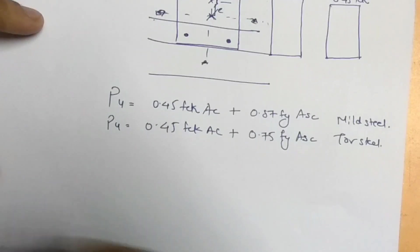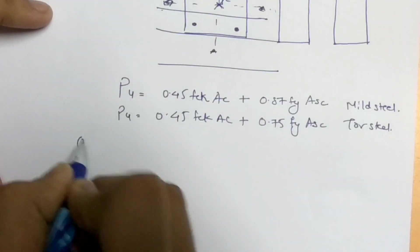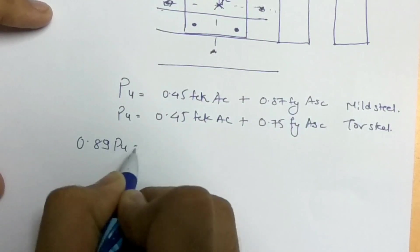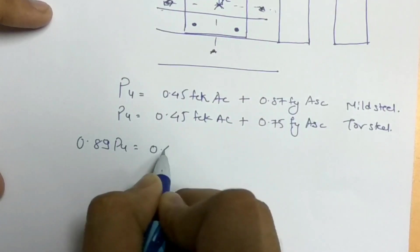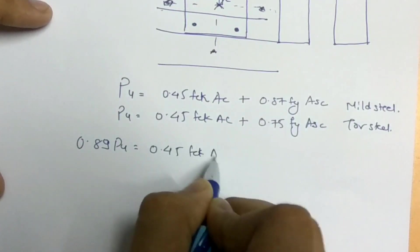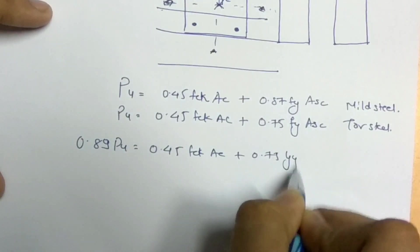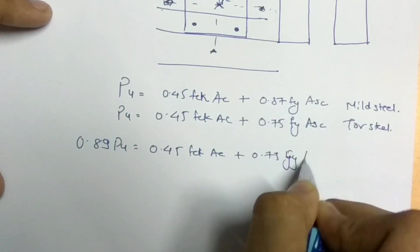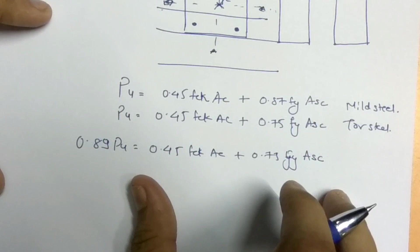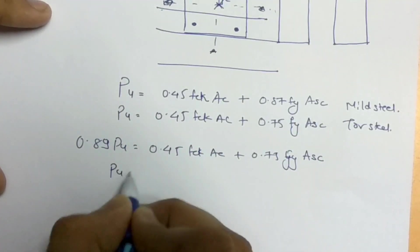The final equation can be written as: Pu = 0.45 fck × Ac + (fy / 0.89) × Asc. Dividing through appropriately, we arrive at this final design equation for axially loaded columns.